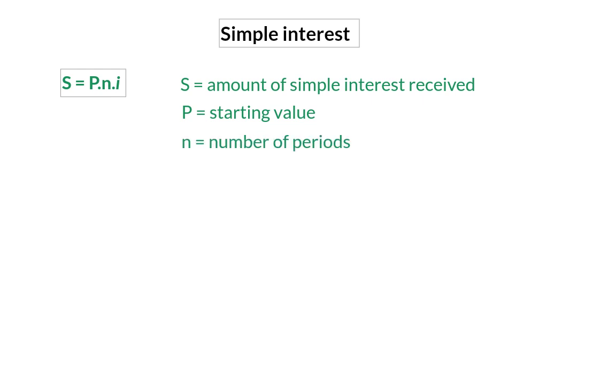When working with simple interest, there are two formulas that you can use in your calculations. The first formula determines the amount of simple interest that you received. In this formula, P is for your present value or starting amount, N is the number of periods, and I is your interest rate divided by 100.